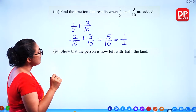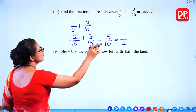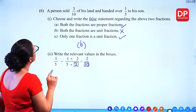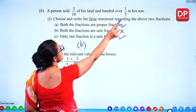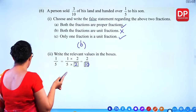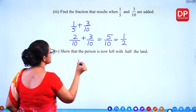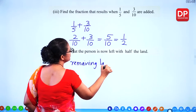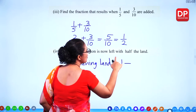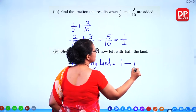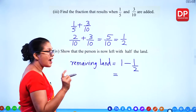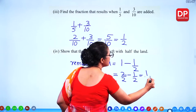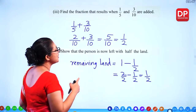Show that the person is now left with half the land. The person sold 3/10 and gave 1/5 (= 2/10) to his son, so the total used is 5/10 = 1/2. The remaining land is 1 minus 1/2. Writing 1 as 2/2, we get 2/2 minus 1/2 = 1/2. So the person is left with half the land.